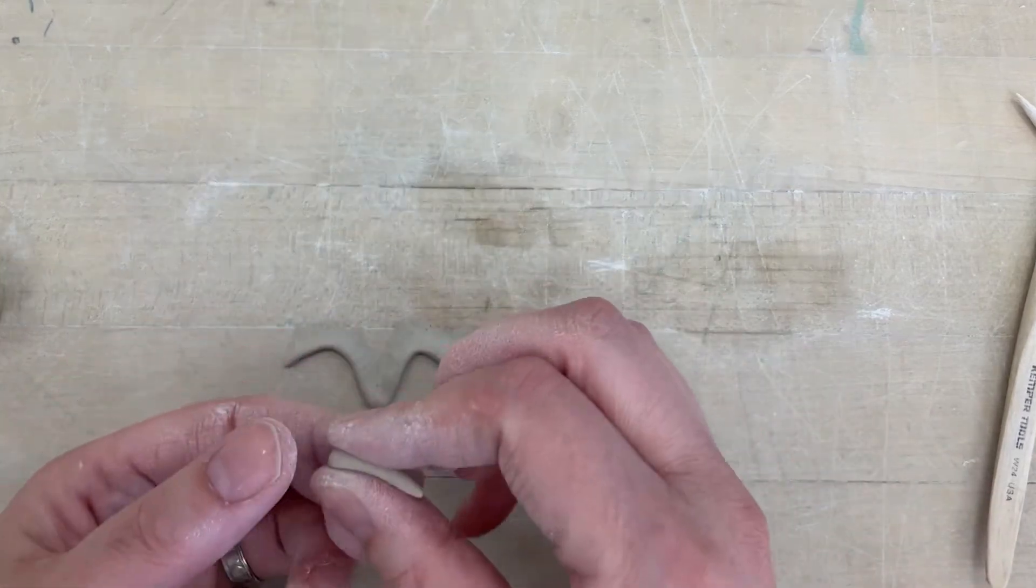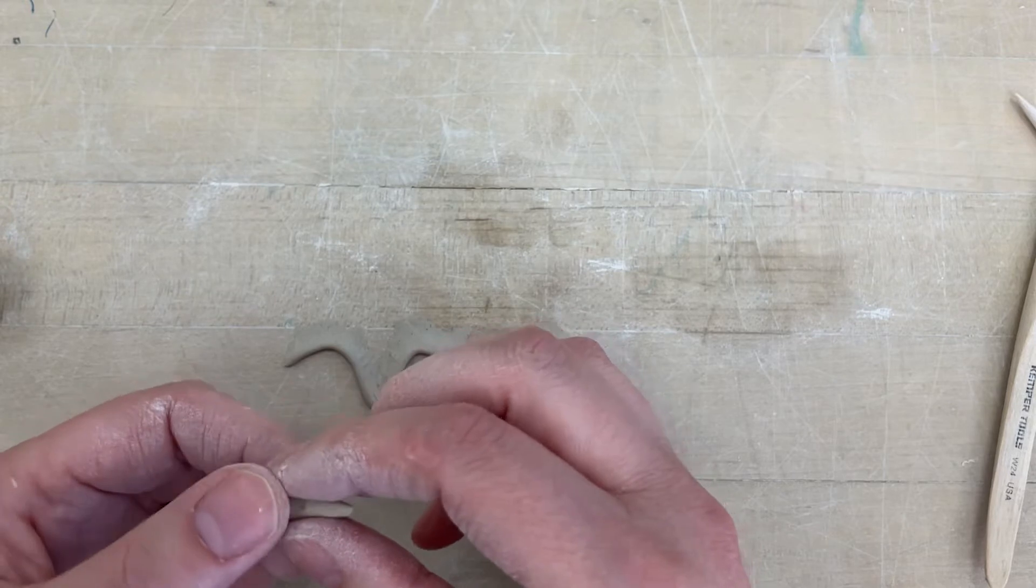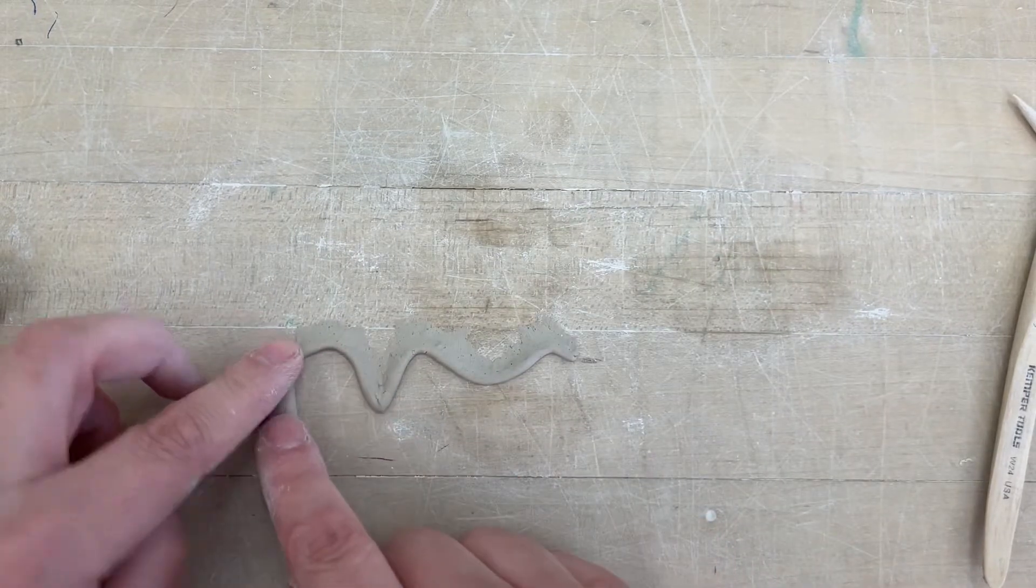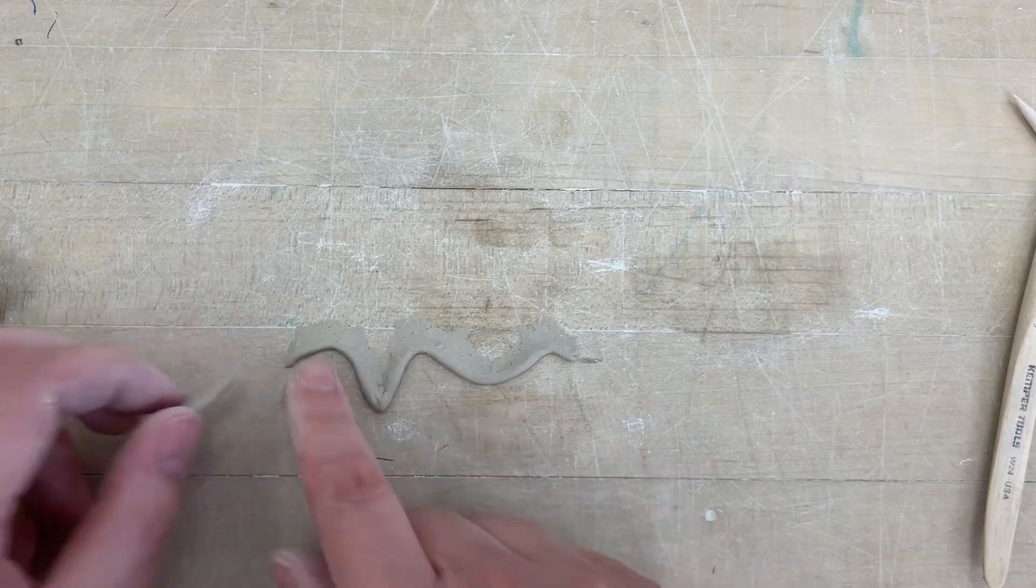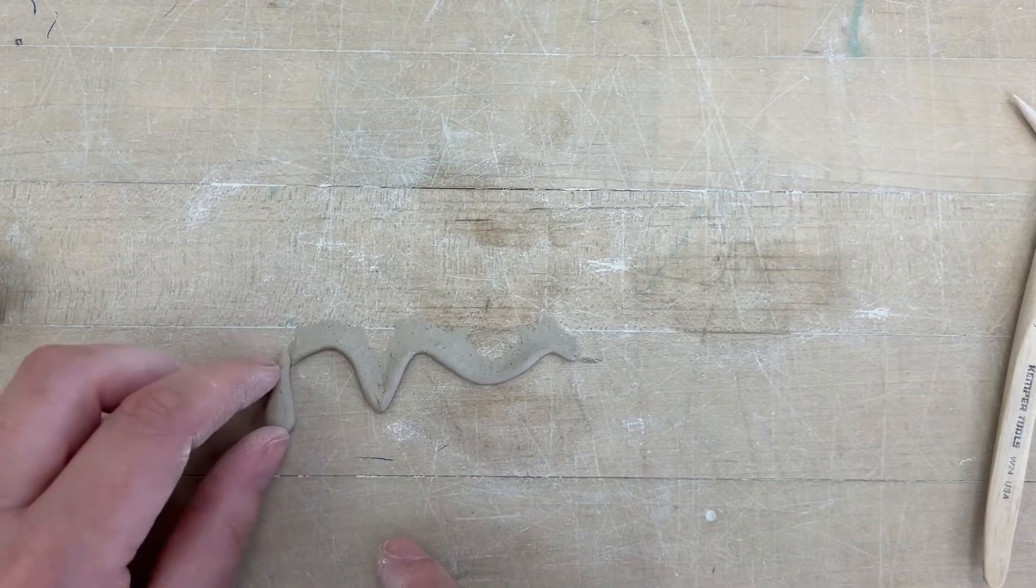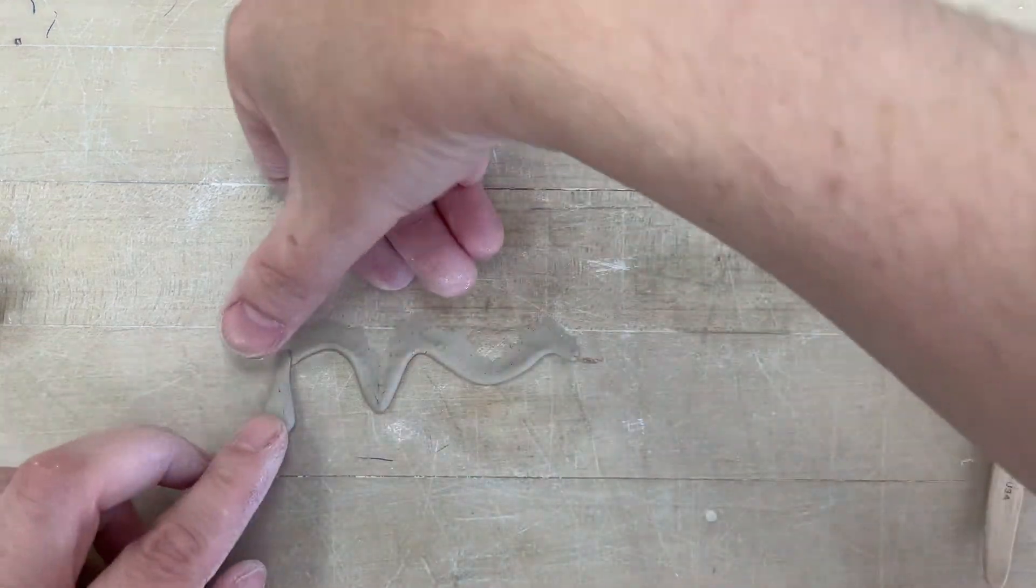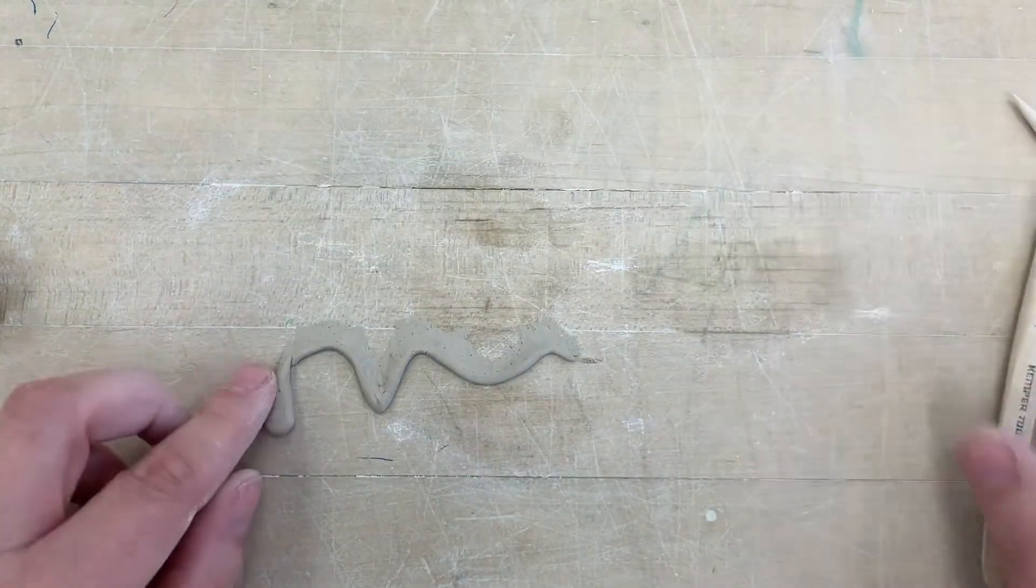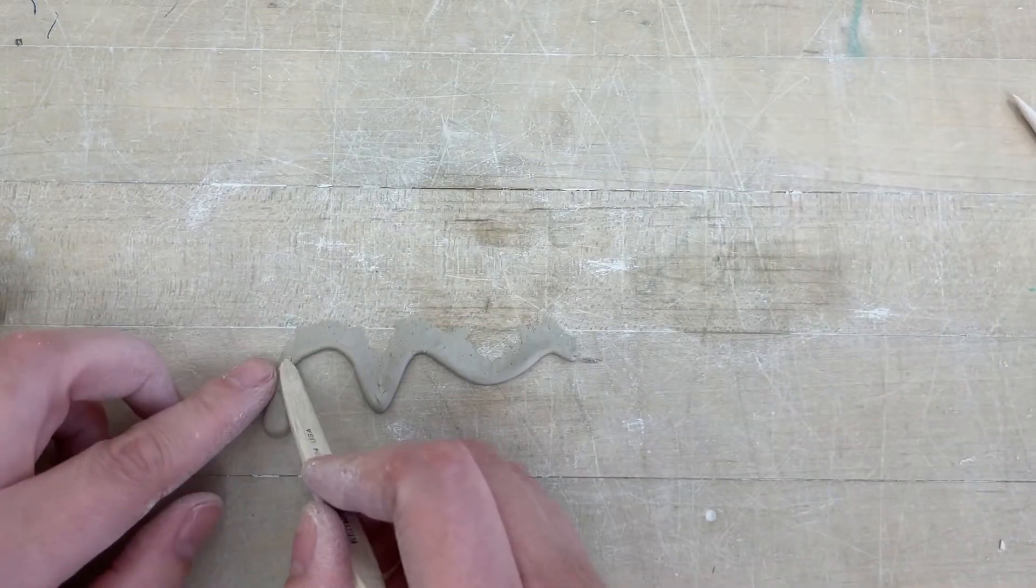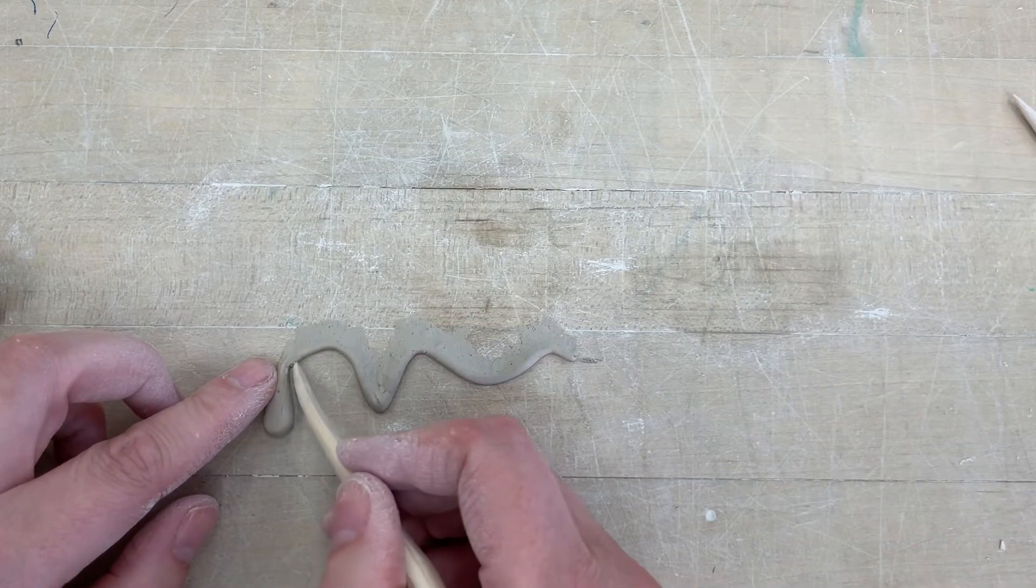It's just a little teardrop, flatten it out just a little bit. Again, you would need to slip and score and the drippy parts go wherever there's a down. So I'm going to add one here, but I'm going to add one right here as well. So I would slip and score and then I'm going to blend just like I did the other little bit. I'm going to blend this.